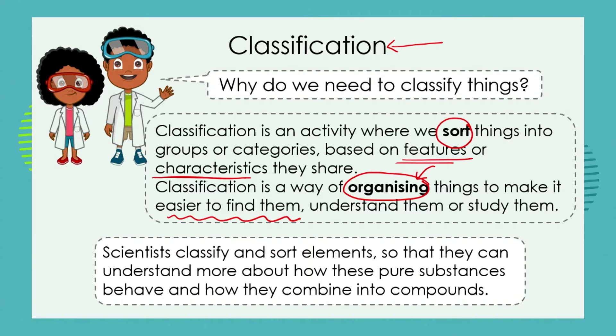It makes it easier to find things. Even if you go into a shop you've never been into before and you need to buy a bottle of milk, you don't have to start at one side and go up and down all the aisles. You'll simply look for where the fridges are with the other dairy products and you will find the milk. So classification makes it easier to find things, to understand them, and to study them.